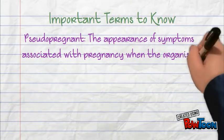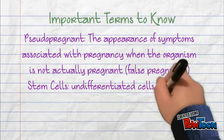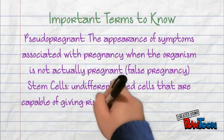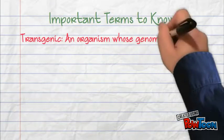This is also known as a false pregnancy. Stem cells are undifferentiated cells that are capable of giving rise to more cells. And finally, transgenic is an organism whose genome has been altered by the transfer of a gene from another species.